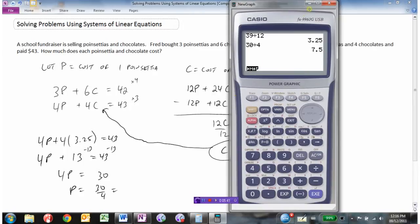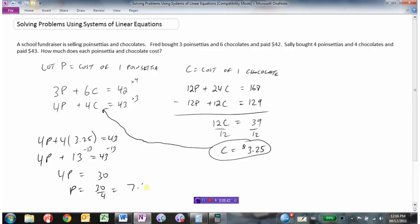So that's $7.50. I can answer the question: poinsettias would cost $7.50 and chocolates would cost $3.25.